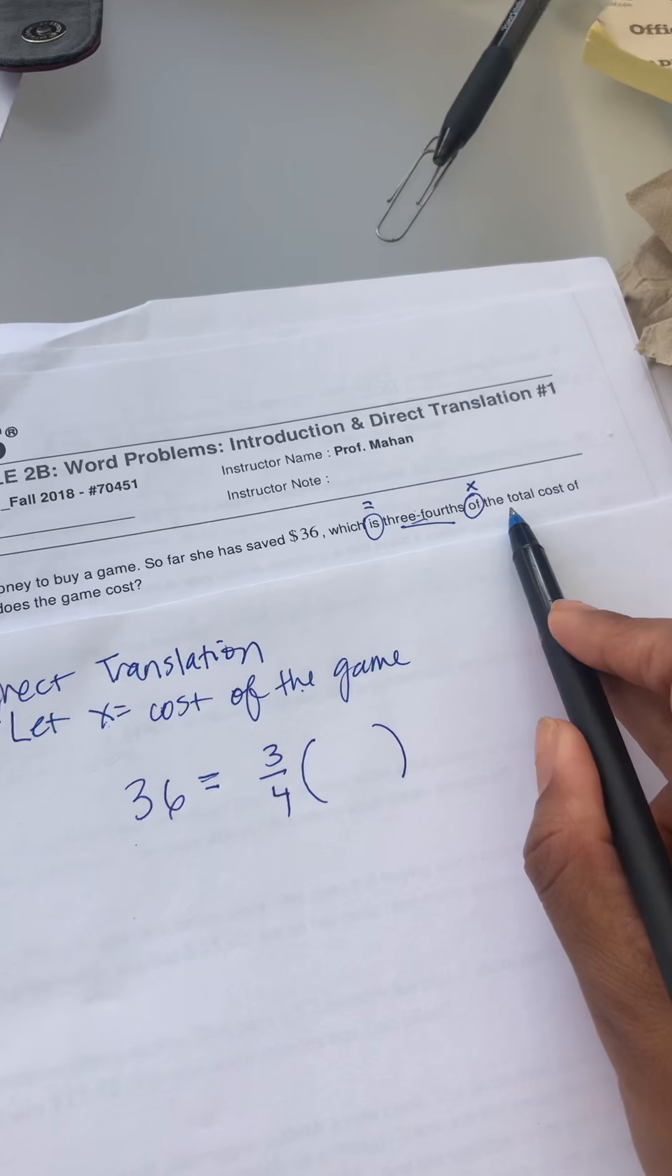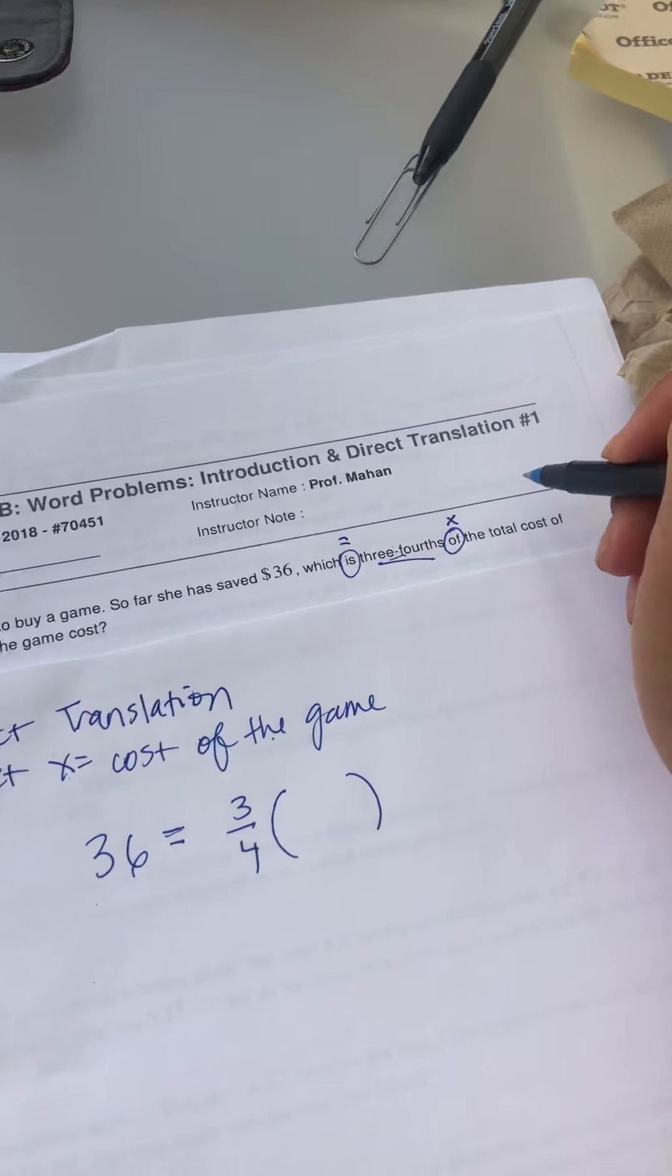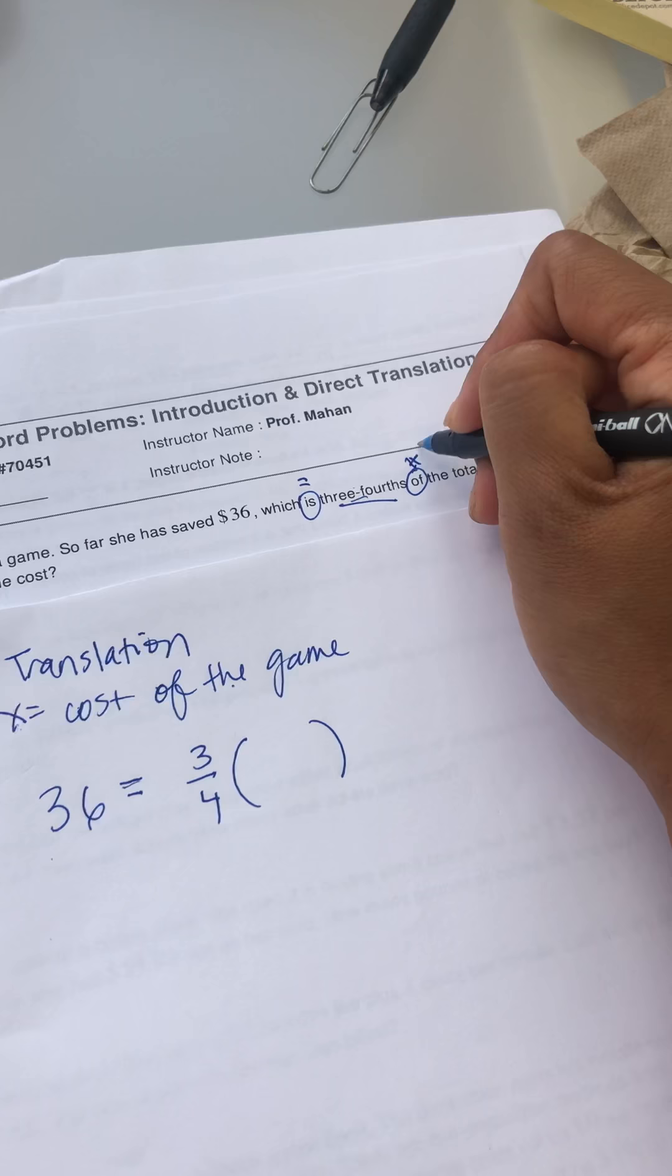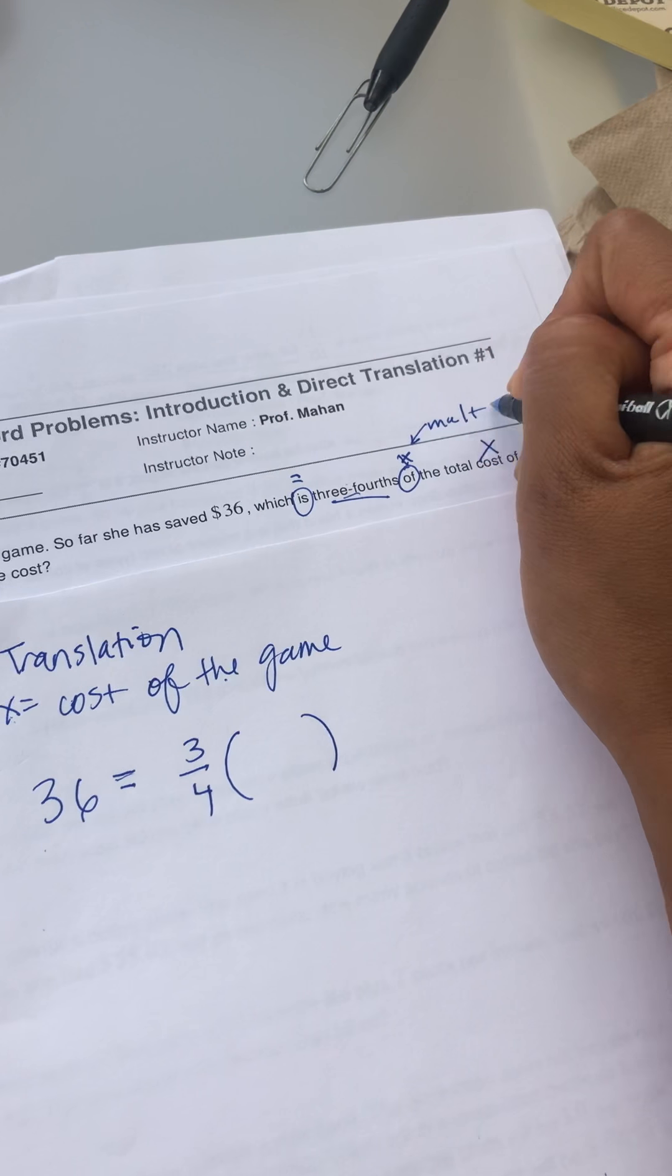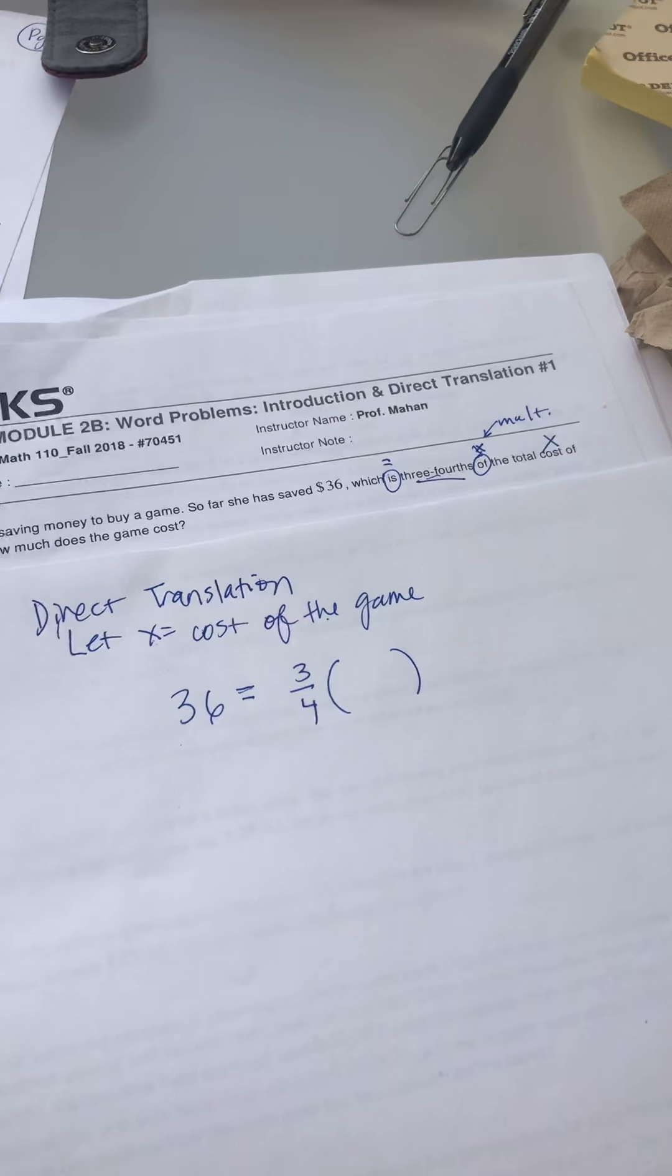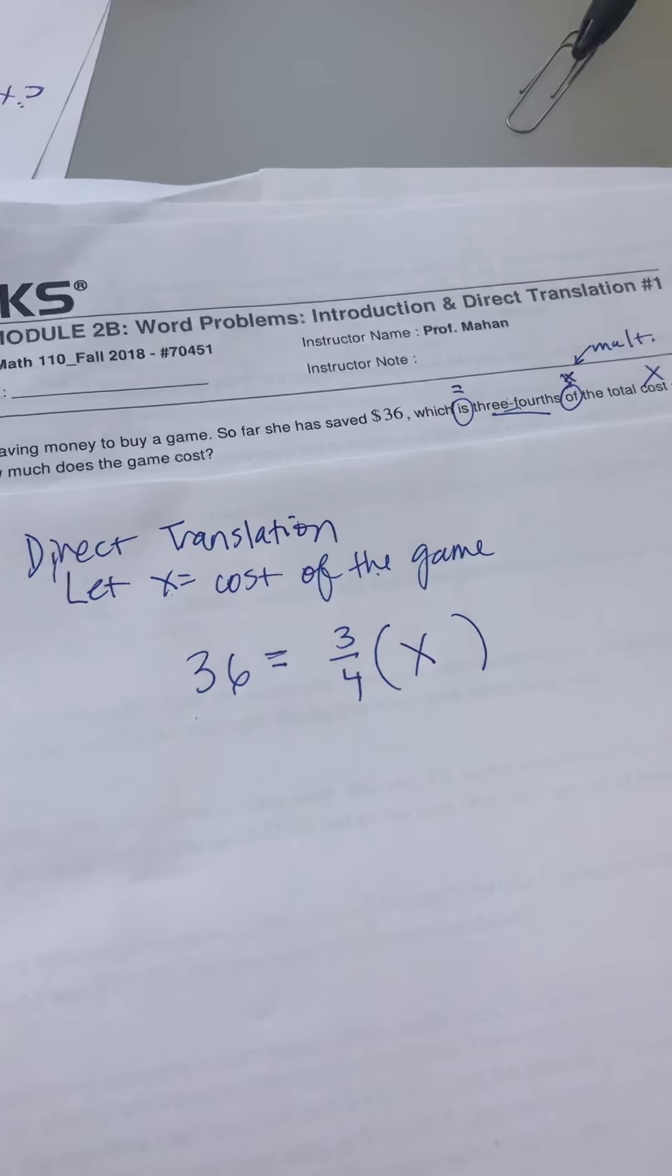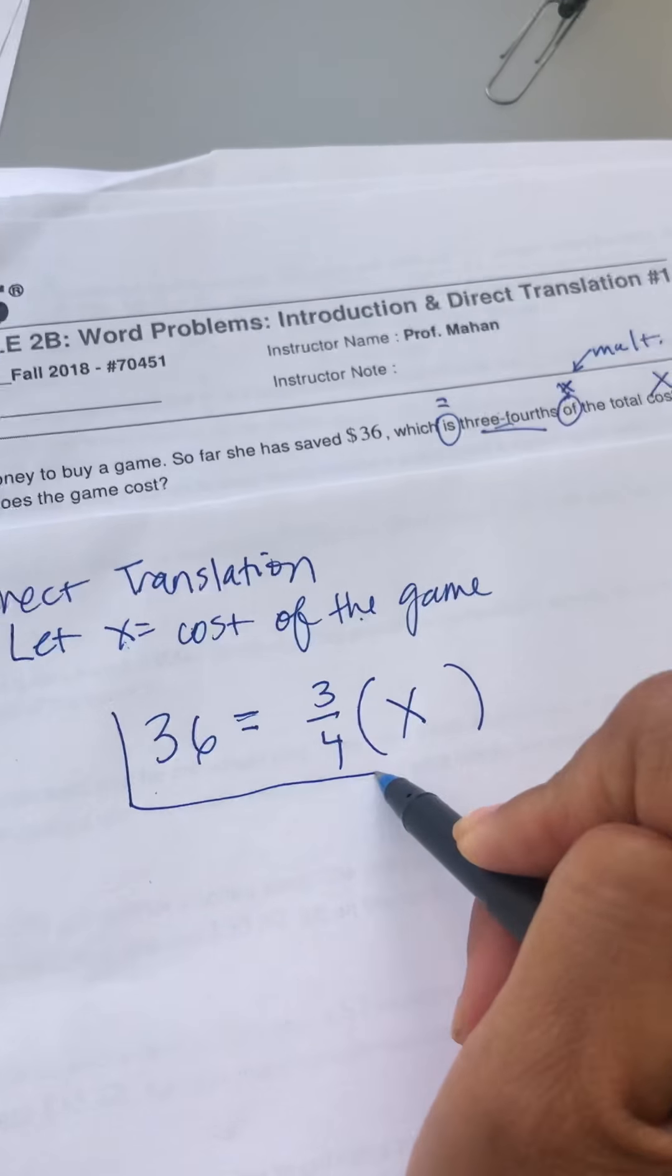And what do you know, the cost of the game we said was x, so the total cost of the game is my x. So now you created an equation with your unknown. That's the hardest part of the problem, translating English to math.